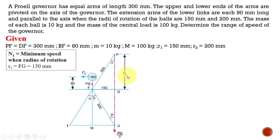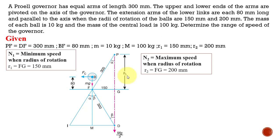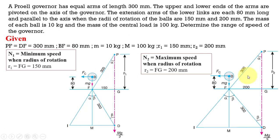Now let us see the configuration for the maximum speed. The maximum speed value is taken as N2, obtained when R2 is 200 mm. The only difference between the two configurations is the radius of rotation — 150 mm corresponding to minimum speed and 200 mm corresponding to maximum speed.